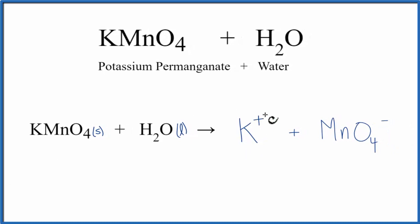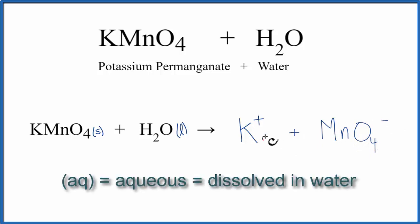Since these ions, the K+ potassium ion and the MnO4 ion, are dissolved in water, we're going to write AQ after each one. That AQ stands for aqueous, which means dissolved in water. And because we wrote that, we don't need to write H2O on this side of the equation.